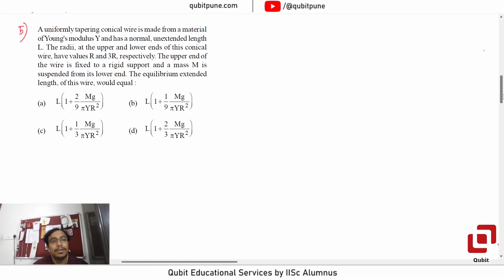A uniformly tapering conical wire is made from a material of Young's modulus Y and has a normal unextended length capital L. The radii at the upper and lower ends of this conical wire have values R and 3R respectively.